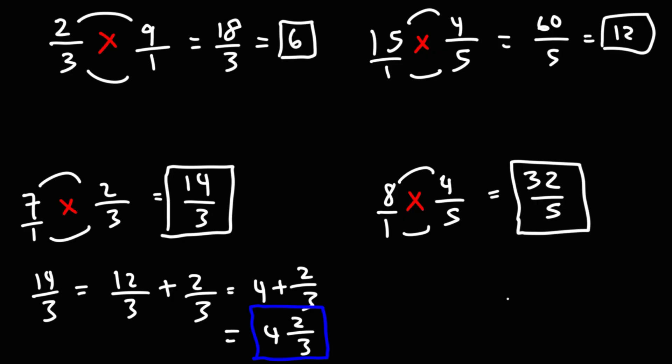Now, if you wanted to convert that to a mixed number, how many times does 5 go into 32? 5 goes into 32 six times. 5 times 6 is 30, and if you subtract 32 by 30, you get 2. So as a mixed number, it's 6 and 2 fifths.